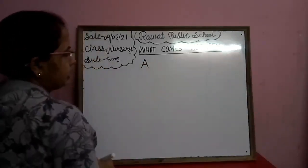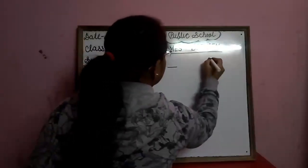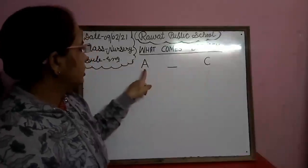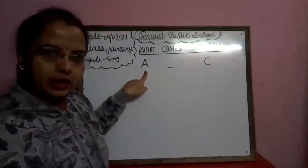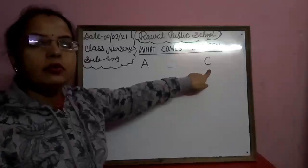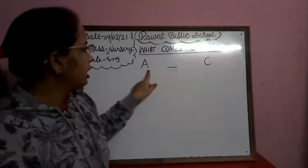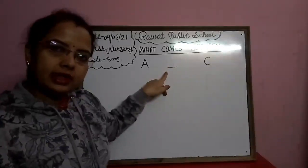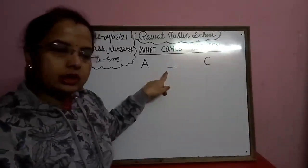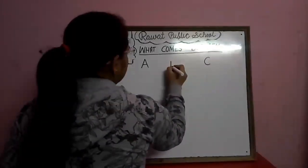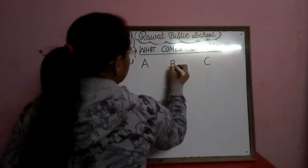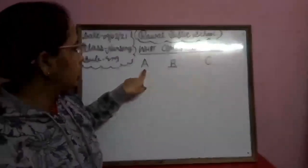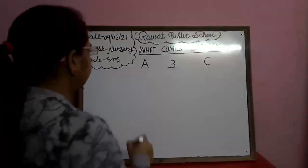This is capital A and C. What comes between A and C? Between A and C, which letter comes? B. So we will write here B. A, B, C.